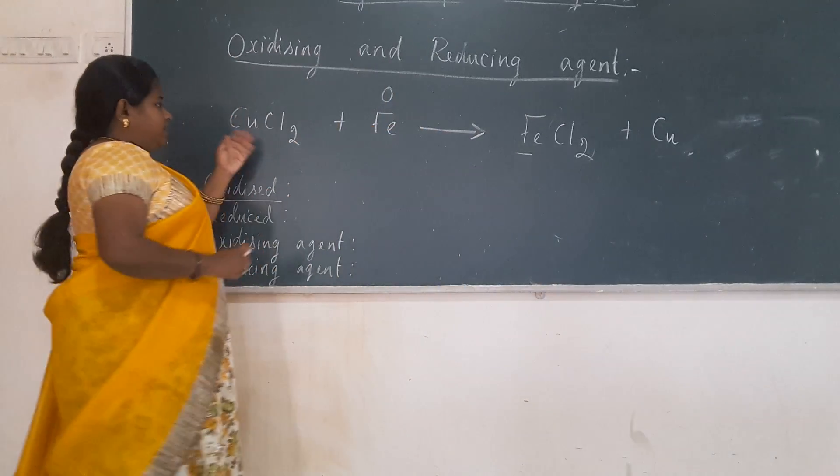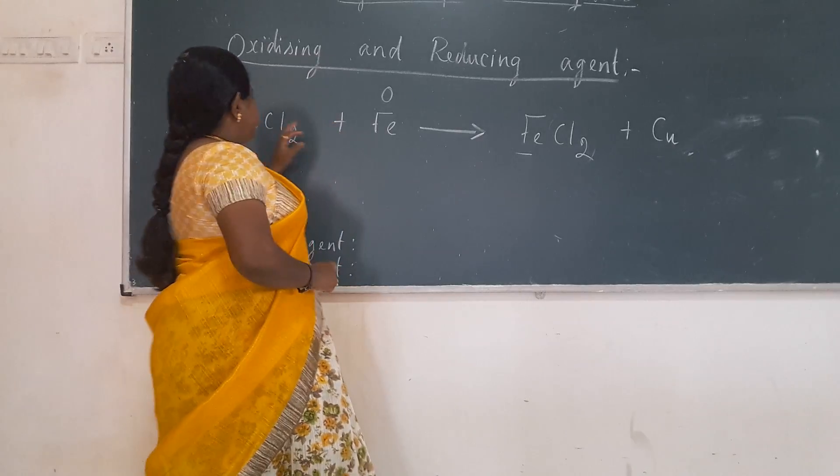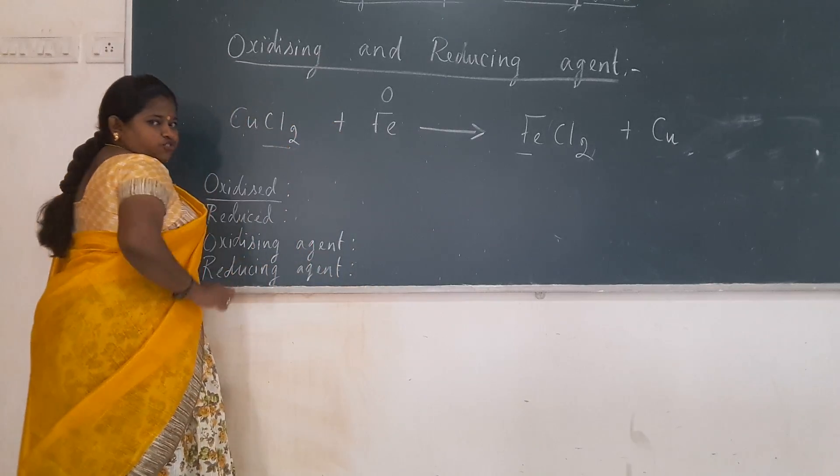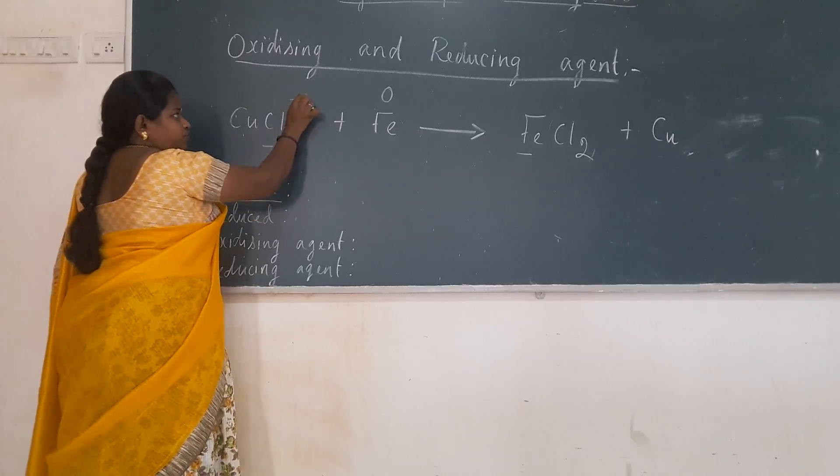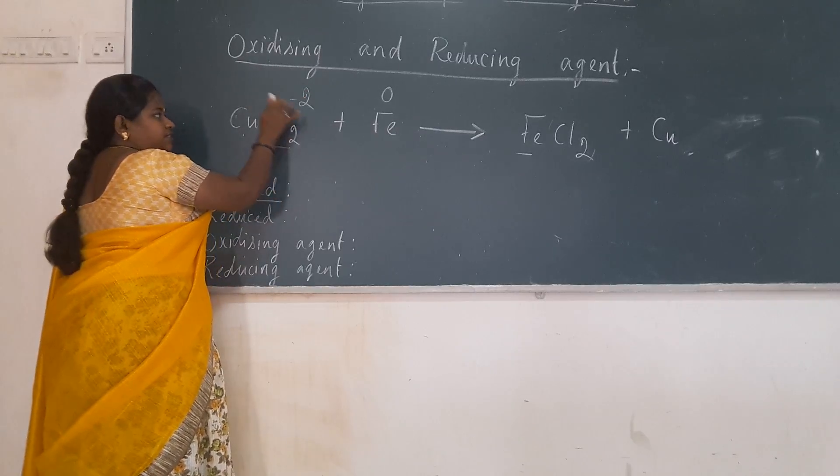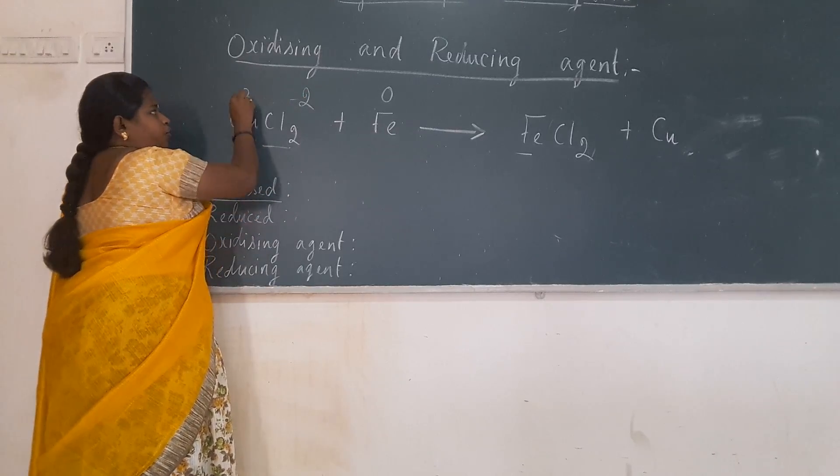So over here, if you see this reaction, copper chloride, chlorine is minus 1, so Cl2 shows minus 2 and that is why copper 2 plus, okay?